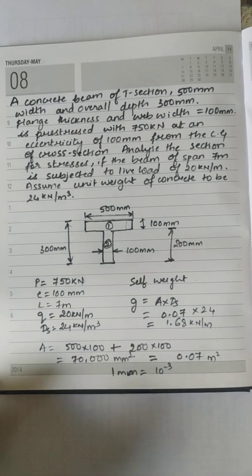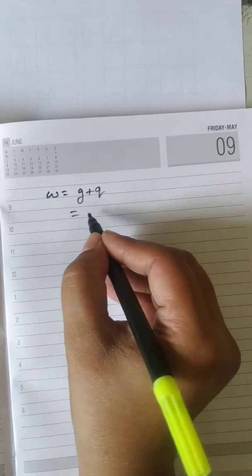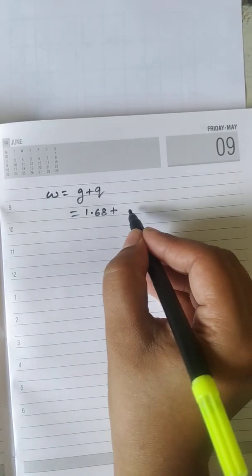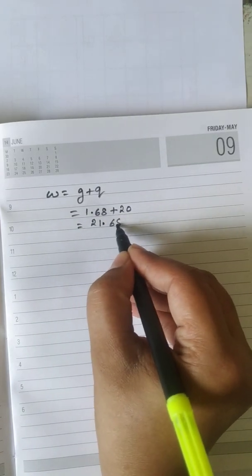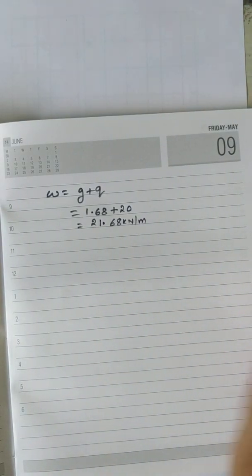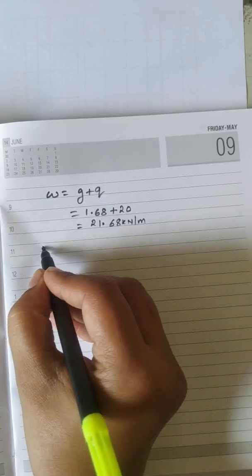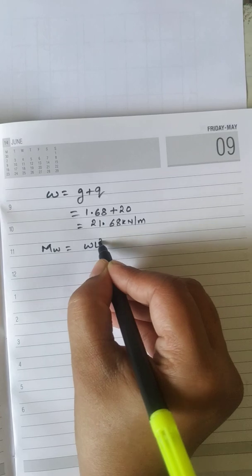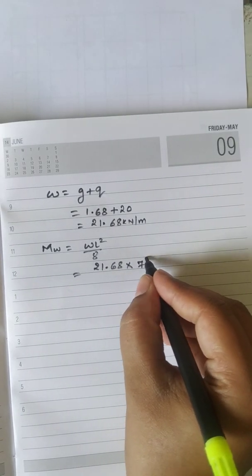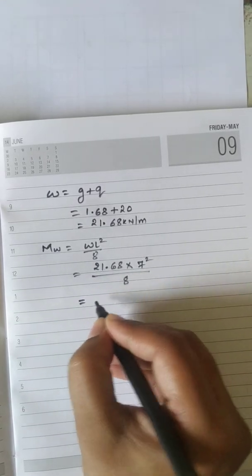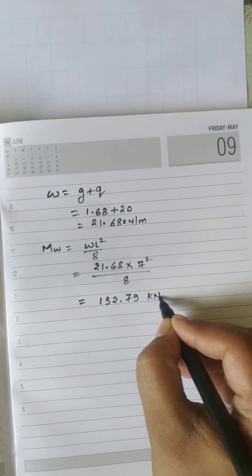The total load on the beam is W = G + Q = 1.68 + 20 = 21.68 kN per meter. The bending moment is calculated as M = WL²/8 = 21.68 × 7² / 8 = 132.79 kilo-newton meter.